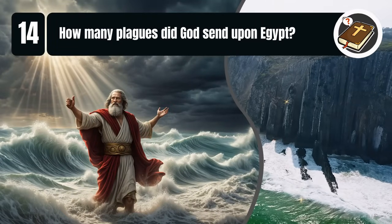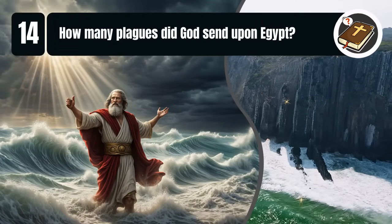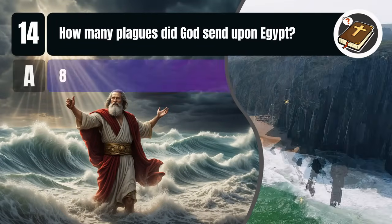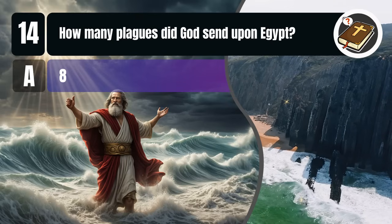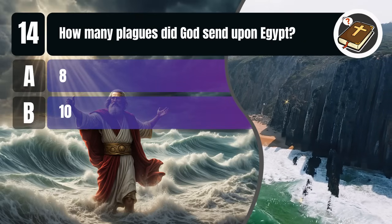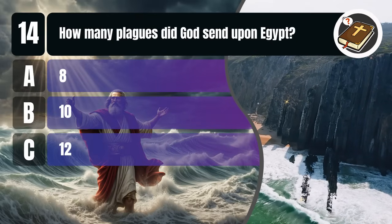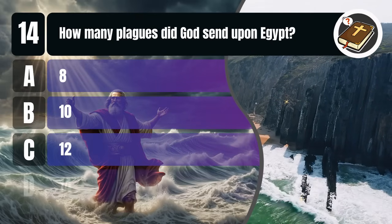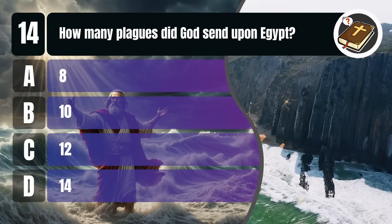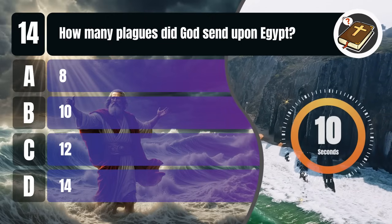Question 14. How many plagues did God send upon Egypt? A. Eight, B. Ten, C. Twelve, D. Fourteen. You get 10 seconds.